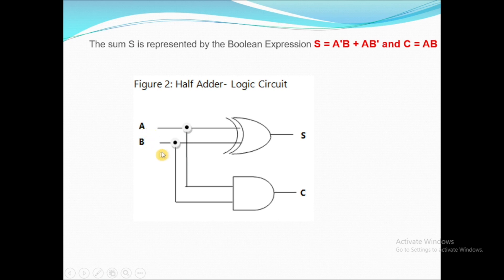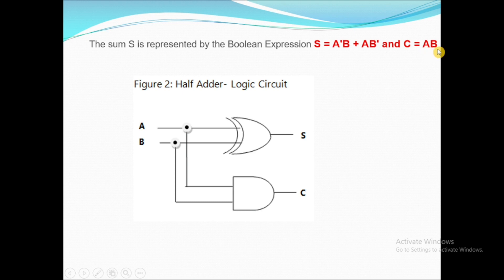Here A and B are two inputs. For generating the sum we use an XOR gate — the Boolean expression is S = A'·B + A·B', which is A XOR B. For determining the carry bit we use a simple AND gate, with Boolean expression C = A·B. Let's implement this in Logisim.